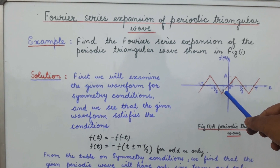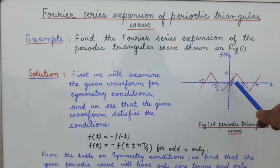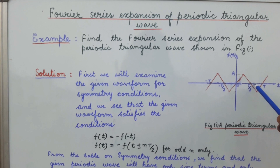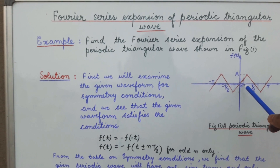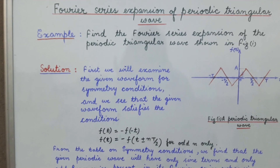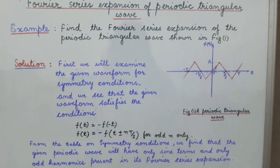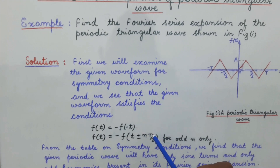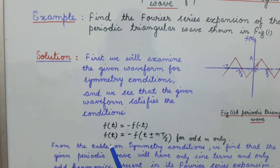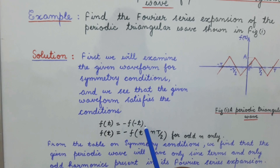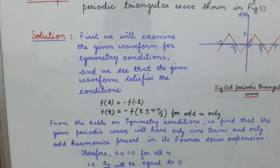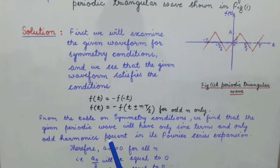f(t) is equal to minus f(-t). Similarly, we find that f(t) is also equal to minus f(t + nT/2), and f(t) is also equal to minus f(t - nT/2). So this given periodic triangular wave satisfies two conditions of symmetry: f(t) = -f(-t), and f(t) = -f(t ± nT/2) for n odd only.